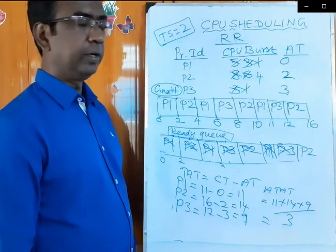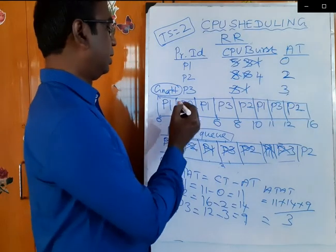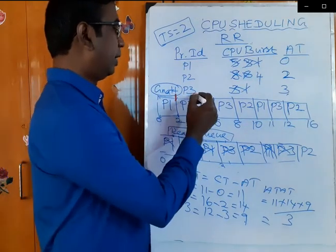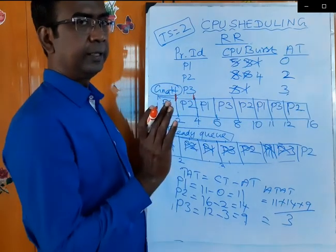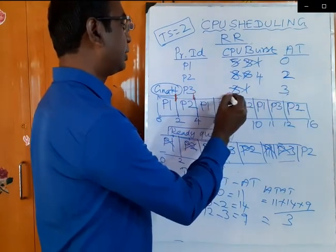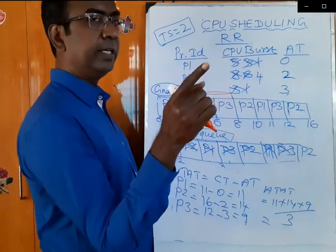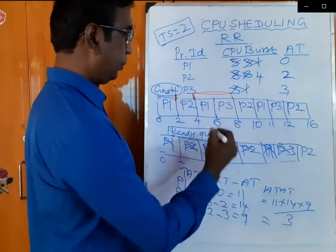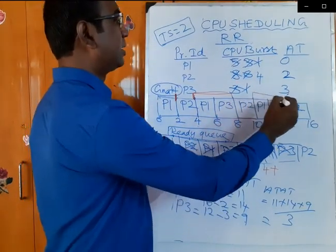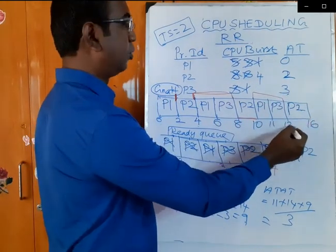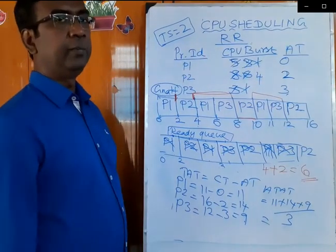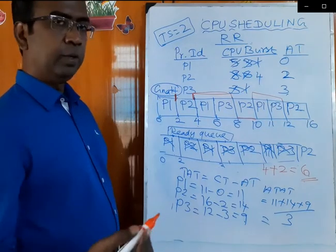Conceptually, let's verify the waiting time for P2. When P2 first enters the CPU and comes out, those seconds in the CPU should not be counted. When P2 is waiting in the ready queue from position 4 to 8, that is 8 minus 4 equals 4. When P2 is again in the CPU we don't count that. Then from position 10 to 12, that is 12 minus 10 equals 2. Total waiting time for P2 is 4 plus 2 equals 6. All three processes have waiting time of 6.